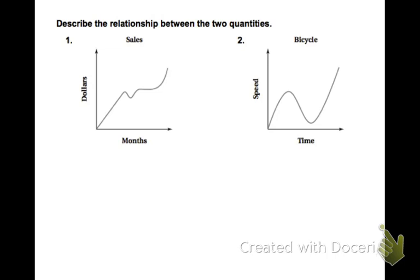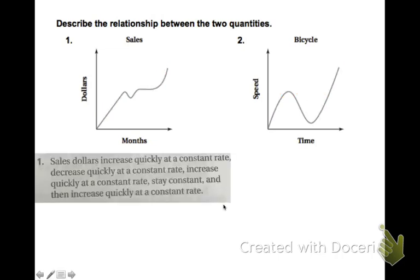So let's describe the relationship between the two quantities. Using our words to describe, you can see you will have an increase, a decrease, an increase, kind of a constant, and then an increase again. Over to the right, increase, decrease pretty rapidly, increase.